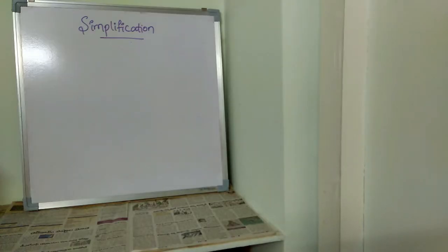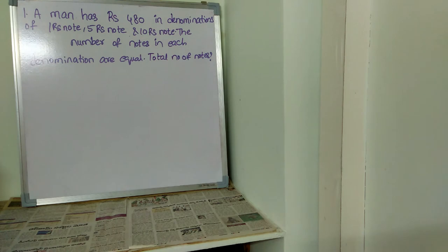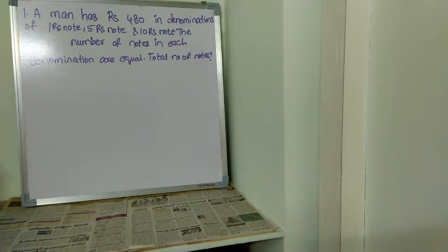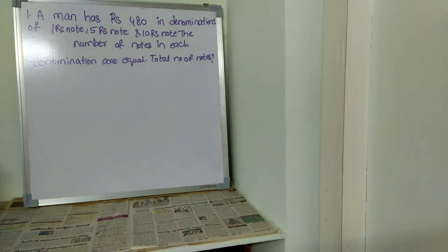Hi friends, welcome back to Best Way to Study. In this video we are going to see everything about simplification. Now let's start solving the problem. Here is the first question: a man has rupees 480 in denominations of one rupee note, five rupee note, and ten rupee note. The number of notes in each denomination are equal. What is the total number of notes the man has?